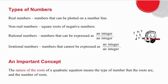Before we start looking at the nature of the roots, we need to be reminded about various things. A real number is any number that can be plotted on a number line — whole numbers, fractions, decimals, positives, negatives, zero — any number that can go on a number line is a real number.